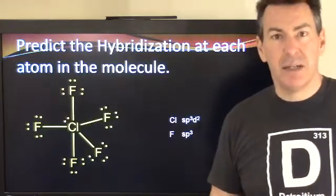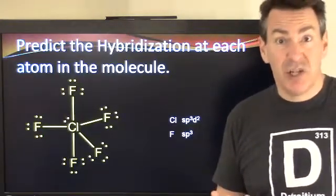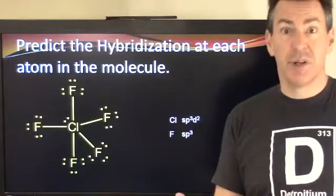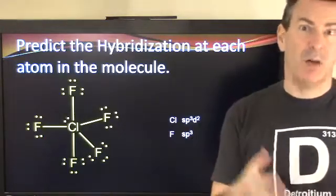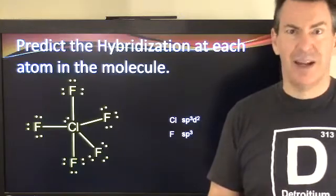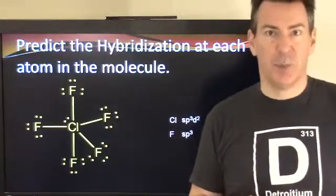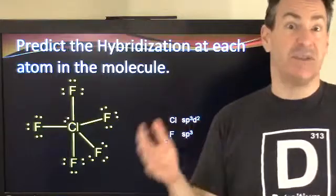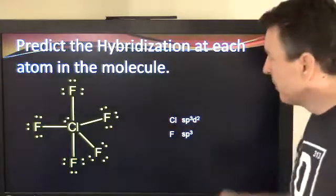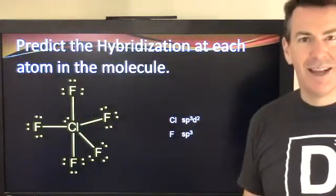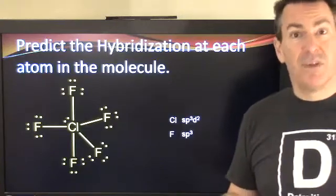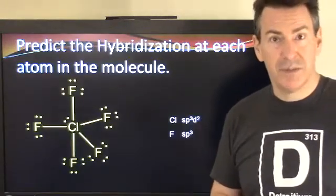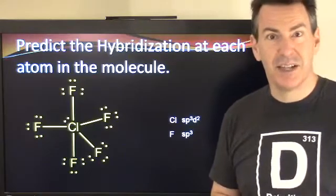That should give you a pretty good idea of how to assign hybridization. Look at the total number of areas — that's how many orbitals you take in to make that number of hybridized orbitals. Orbitals in has to equal orbitals out: it's like a conservation of orbitals idea. Everything in has to come back out. Hopefully you got some good information from that. I'll see you in the next video.